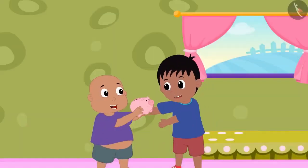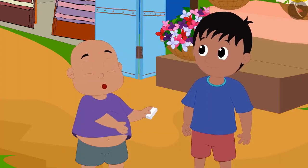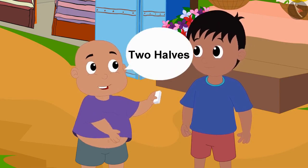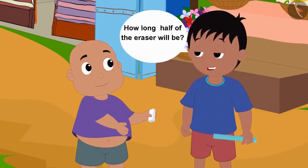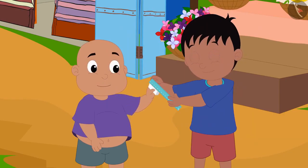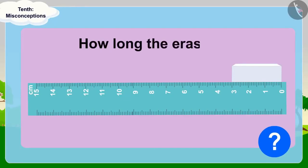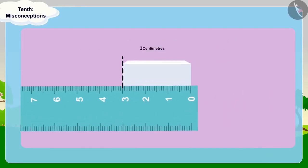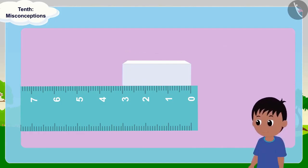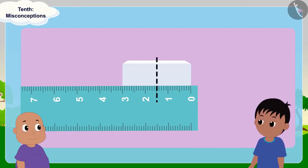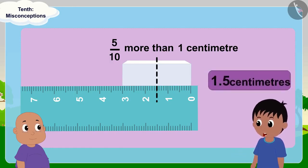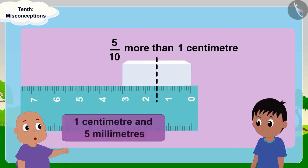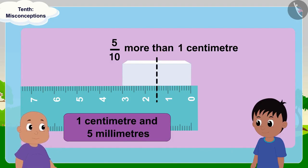Raju and Babalu collected some money and bought an eraser from the market. Babalu says: Let us divide this eraser in two halves. They measure it with a ruler. The eraser is 3 centimeters long. Raju and Babalu saw that half of the eraser is 5 tenths more than a centimeter. Raju said: Half of the eraser is 1.5 centimeters long. But Babalu said: Half of the eraser is 1 centimeter and 5 millimeters long.